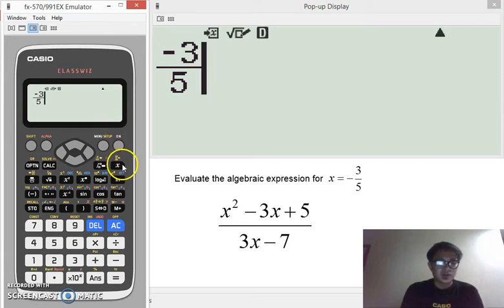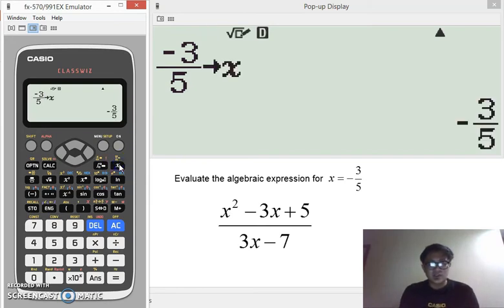And it's here, it's this button right below the on button. So, pressing this, then notice again that an arrow will appear and it will be after that is the variable x. Meaning, then the value negative 3 over 5 is already assigned to x.